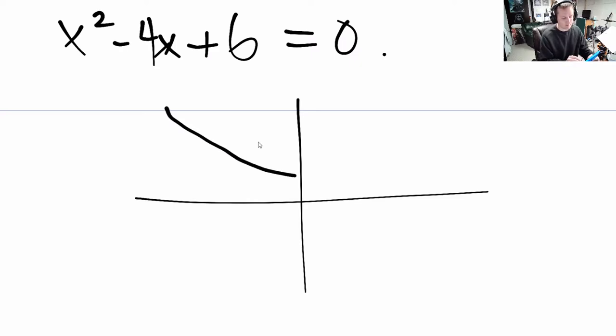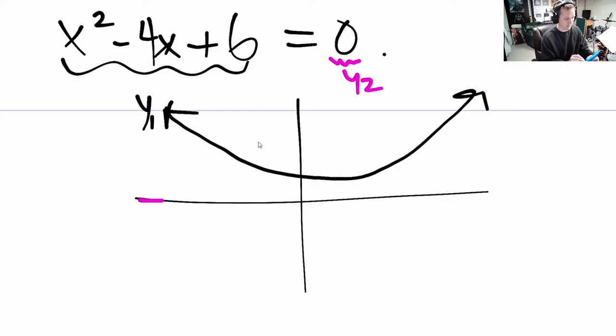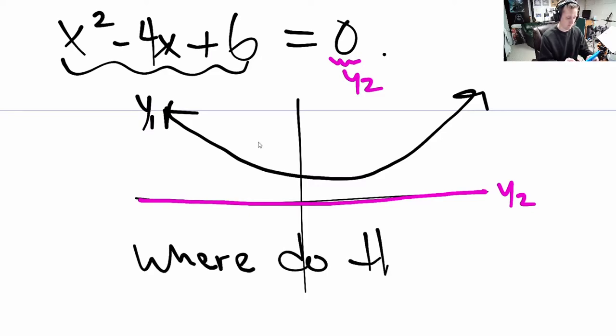And if you were to graph this, what would you find? You would find something that looks like this. It's a parabola, a quadratic facing upwards. So that's y₁. y₂ on the right side is a horizontal line at a height of 0. Where do they cross? For what x values do they cross?